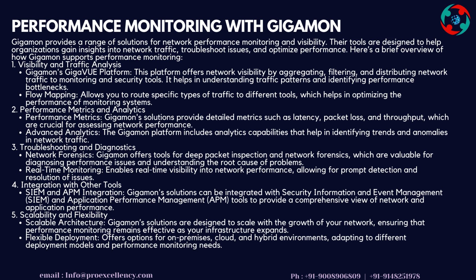Feature 2: Performance Metrics and Analytics — Gigamon solutions provide detailed metrics such as latency, packet loss, and throughput, which are crucial for assessing network performance. The platform includes advanced analytics capabilities that help in identifying trends and anomalies in network traffic. Feature 3: Troubleshooting and Diagnostics — Gigamon offers tools for deep packet inspection and network forensics, valuable for diagnosing performance issues and understanding root causes. Feature 4: Real-time monitoring enables real-time visibility into network performance, allowing for prompt detection and resolution of issues.